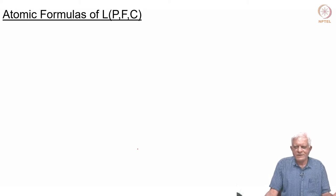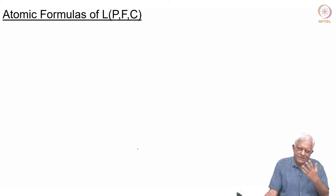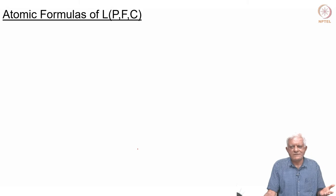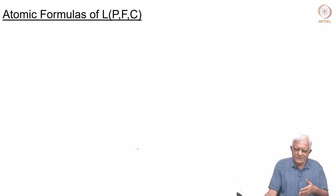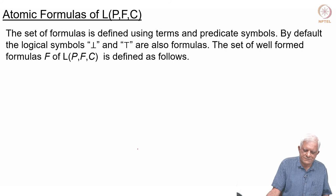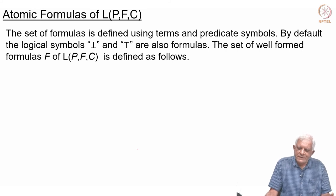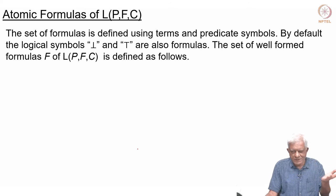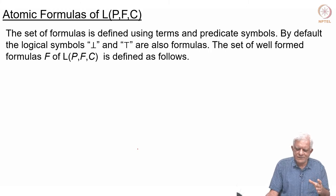Now we come to formulas. A logic is a set of sentences, and sentences are something which can be true or false. Terms cannot be true or false — 7 cannot be true or false, 7 plus 13 cannot be true or false, they are just elements of the domain. We are heading towards things which can be true or false. First we will define the atomic formulas — in propositional logic atomic formulas were the propositional symbols — something similar will happen here, but first we need to define the atomic formulas for first order logic.